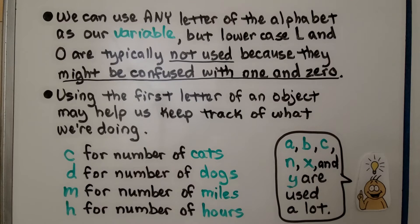We can use any letter of the alphabet as our variable, but lowercase l and o are typically not used because they might be confused with 1 and 0. Using the first letter of an object may help us keep track of what we're doing. We could use c for a number of cats, or d for dogs, m for the number of miles, or h for the number of hours. But A, B, C, N, X, and Y are used a lot.